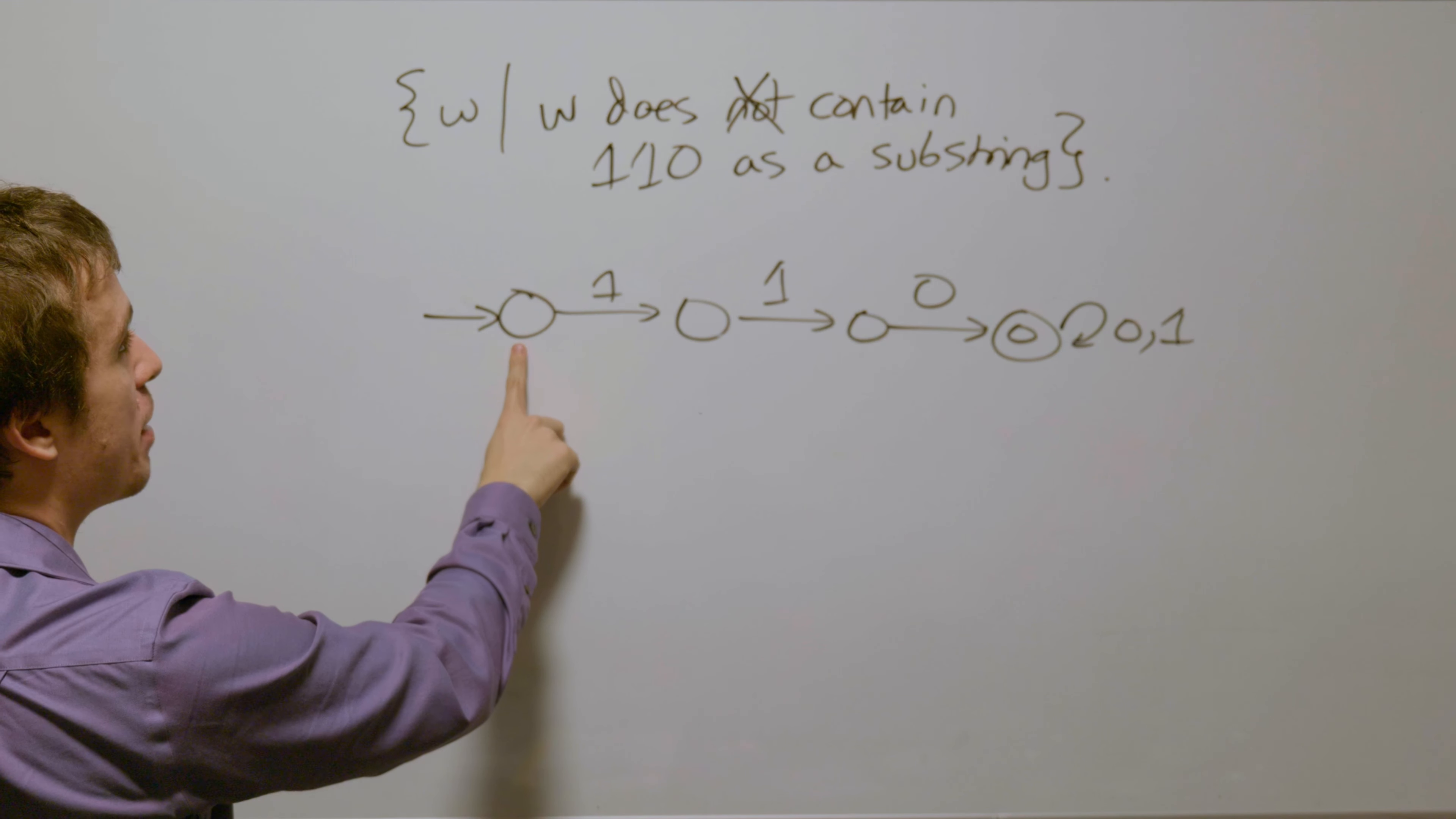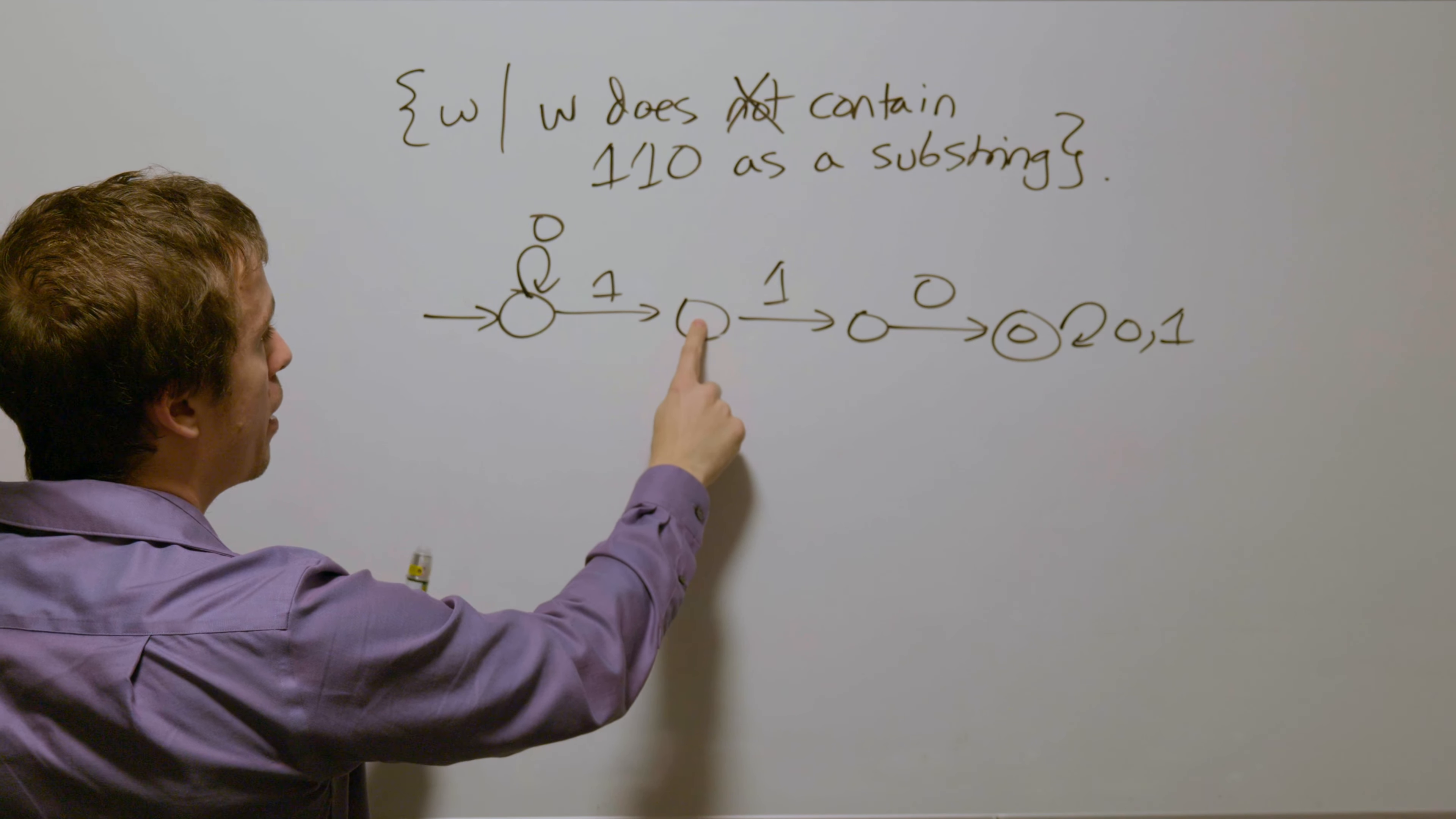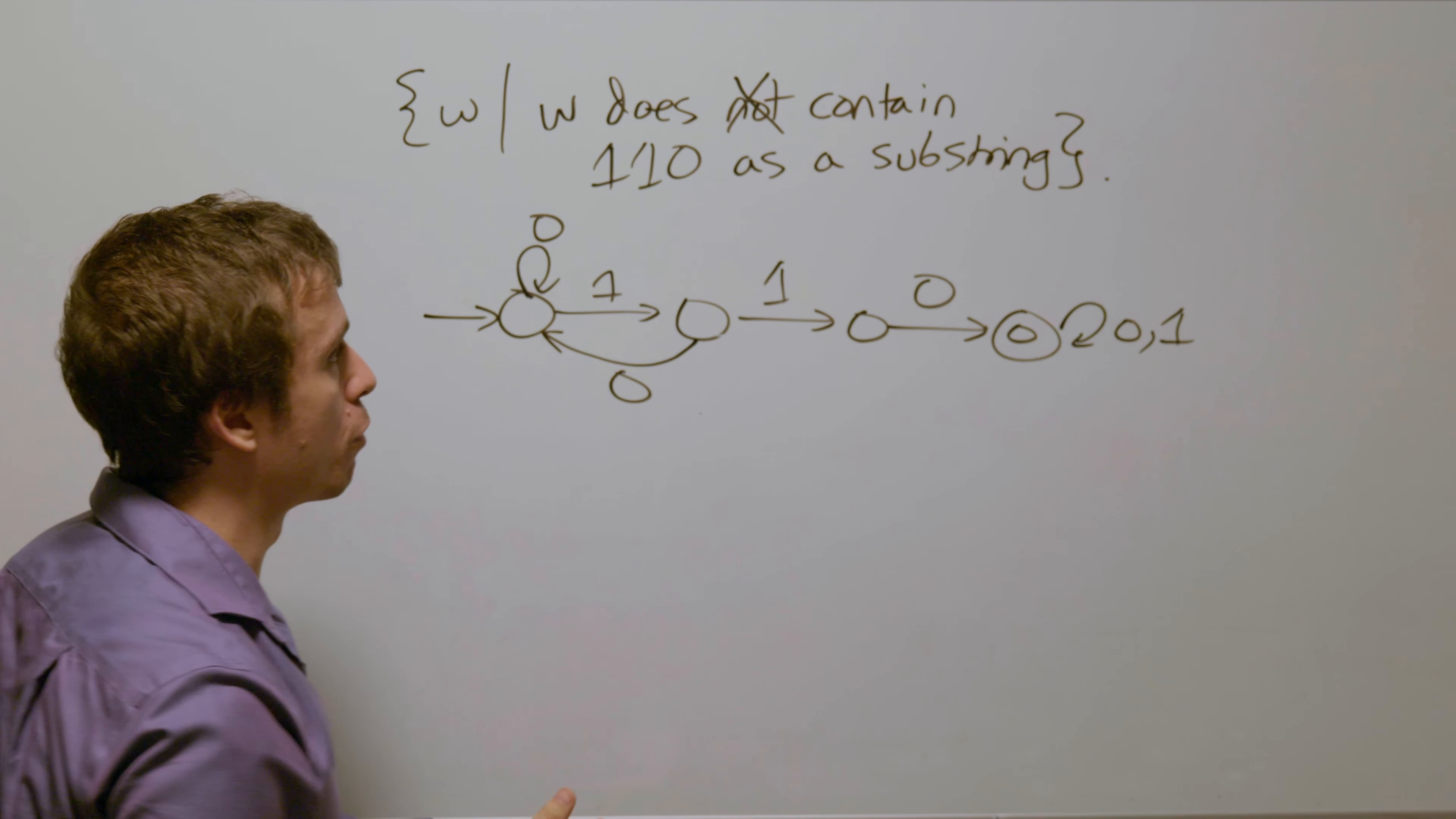If we read a 0 at the beginning, that doesn't help us get 110 and so therefore we're not going to progress along the chain here. If we read a 0 here, that destroyed the work that we've just done reading the 1 in the supposed 110 substring. And so therefore we need to come back because it just destroyed all the work we did.